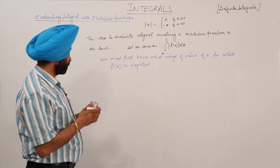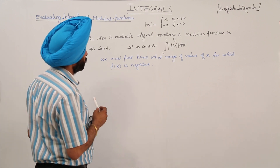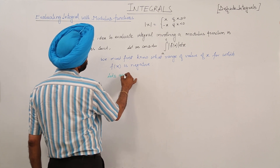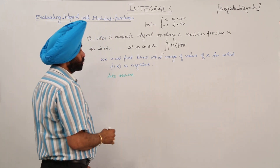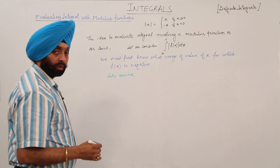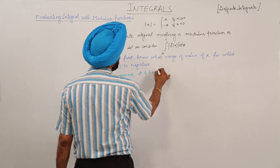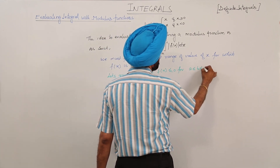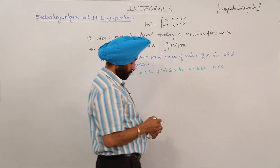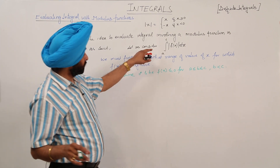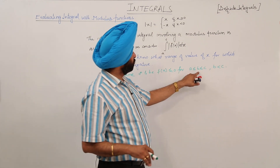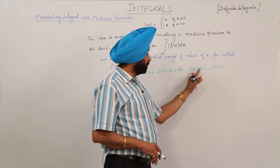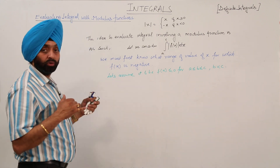We must first know what range of values of x makes f(x) negative. Let's assume that f(x) is less than or equal to 0 for a ≤ x ≤ b ≤ c, where b is less than c. So b is a value in between a and c for which f(x) is less than or equal to 0, and b is greater than a.